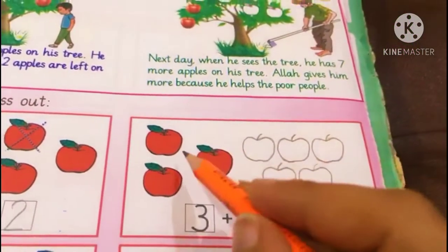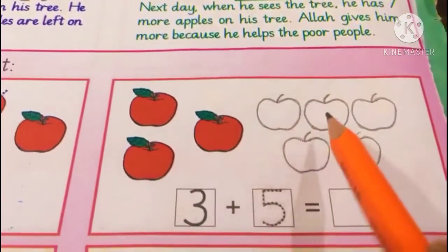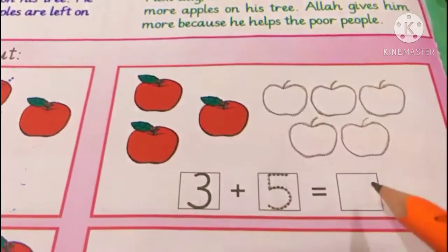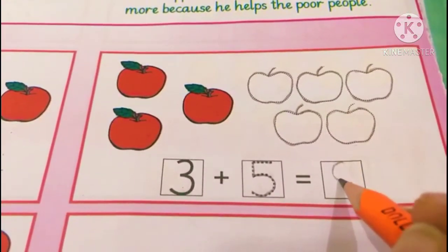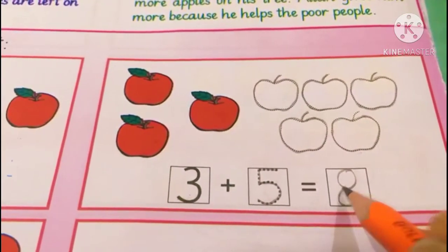How many apples are there altogether? 1, 2, 3, 4, 5, 6, 7, 8. There are total 8 apples. When we add 5 apples in 3 apples, total how many apples? 8.